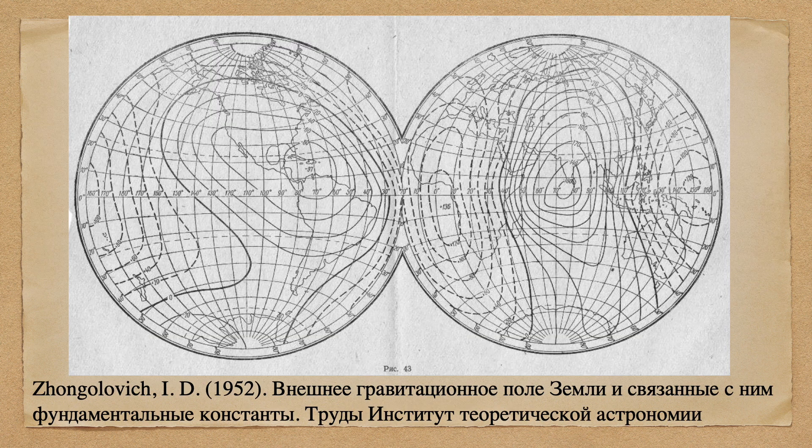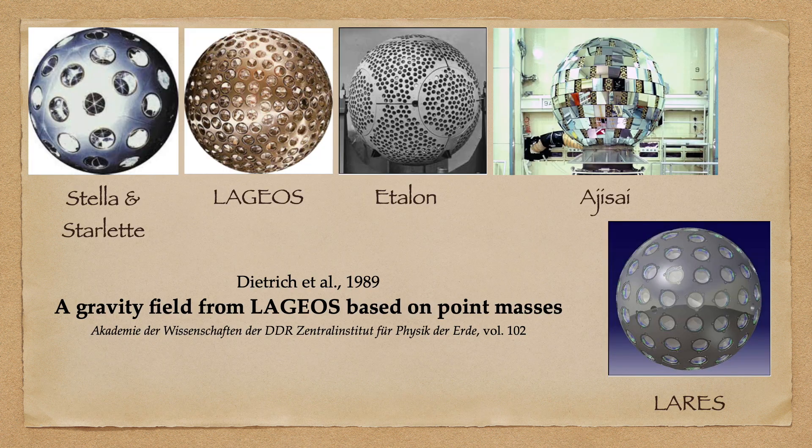The first global geoid map was produced by the Russians in 1952, but this effort only achieved a spatial resolution of about 500 kilometers. Since the 1970s, these more traditional forms of gravity observation have been supplemented by satellite observations.